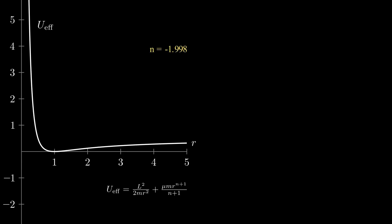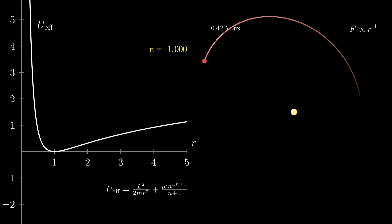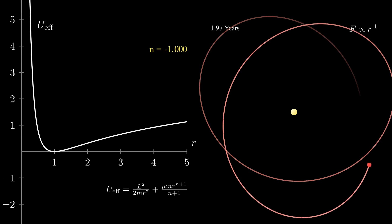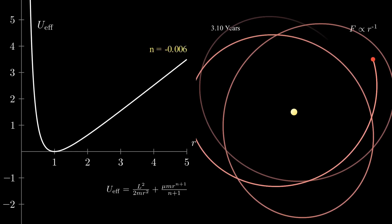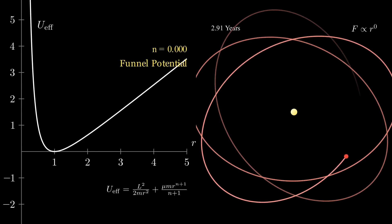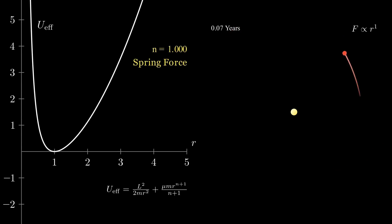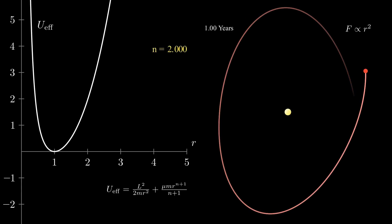That applies to other exponents as well. Here's an inverse linear force, a constant force also known as a funnel potential — this is approximately how the strong nuclear force works — a spring force, and even higher exponents. They all still have a local minimum potential. All of these exponents will produce bounded orbits, so planets in two dimensions could still orbit stars for billions of years, as long as they don't get too close to each other.